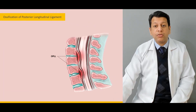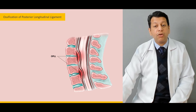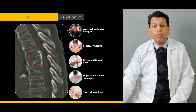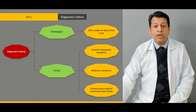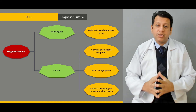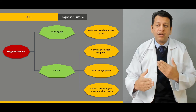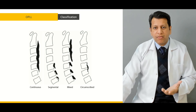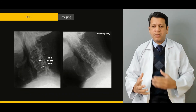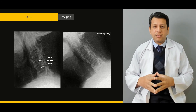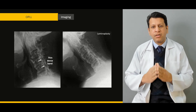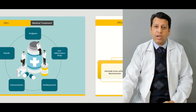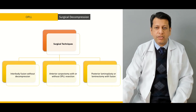We'll then move on to one of the common causes of cervical myelopathy — OPLL, or ossification of the posterior longitudinal ligament. We'll discuss the signs and symptoms, the findings on examination, the radiological and clinical diagnostic criteria, and then the treatment, which may include conservative as well as operative management. We'll also look at the lateral cervical spine X-ray and what to look for to diagnose a patient with OPLL, and when to proceed with medical versus surgical treatment.